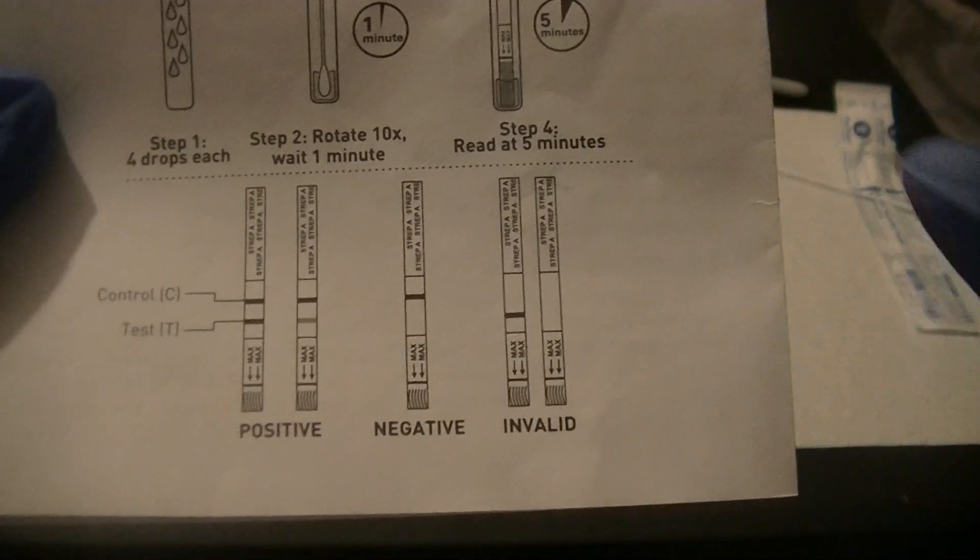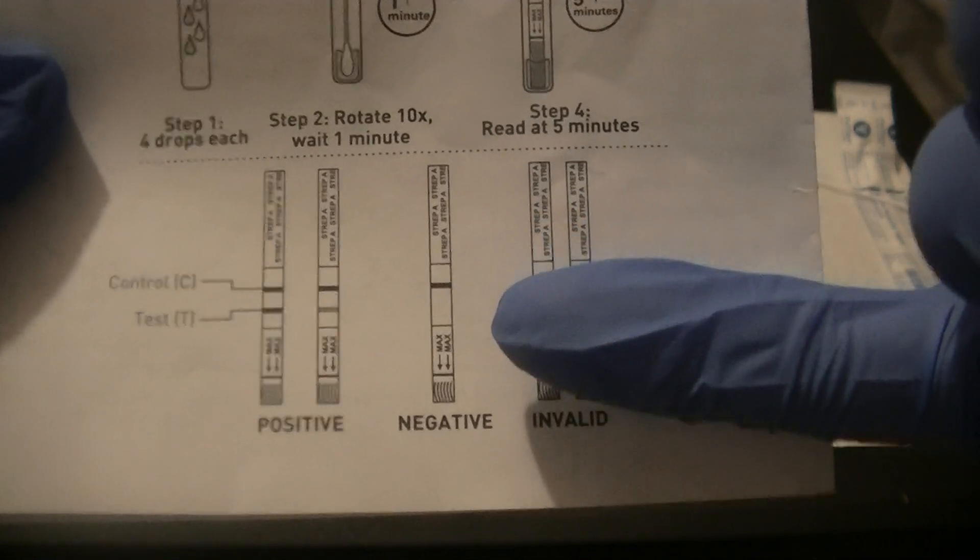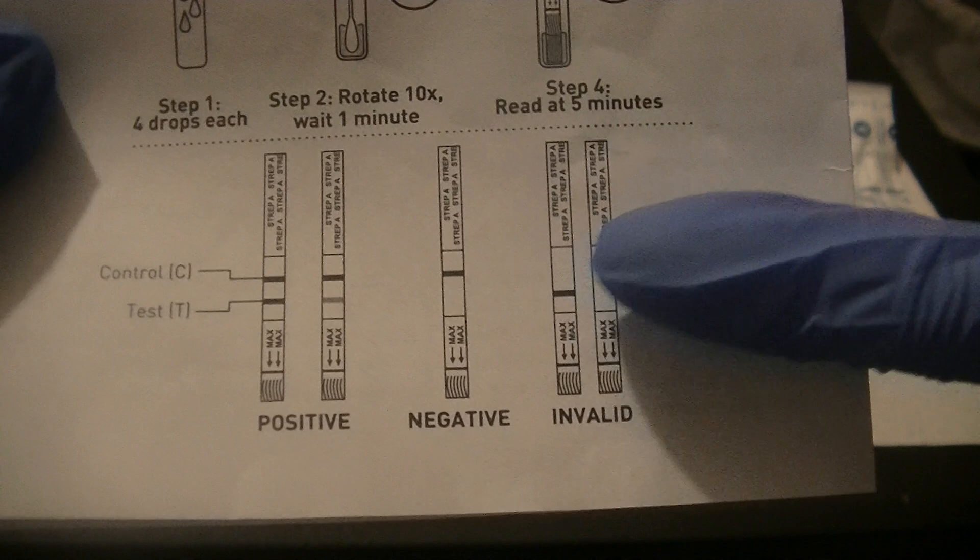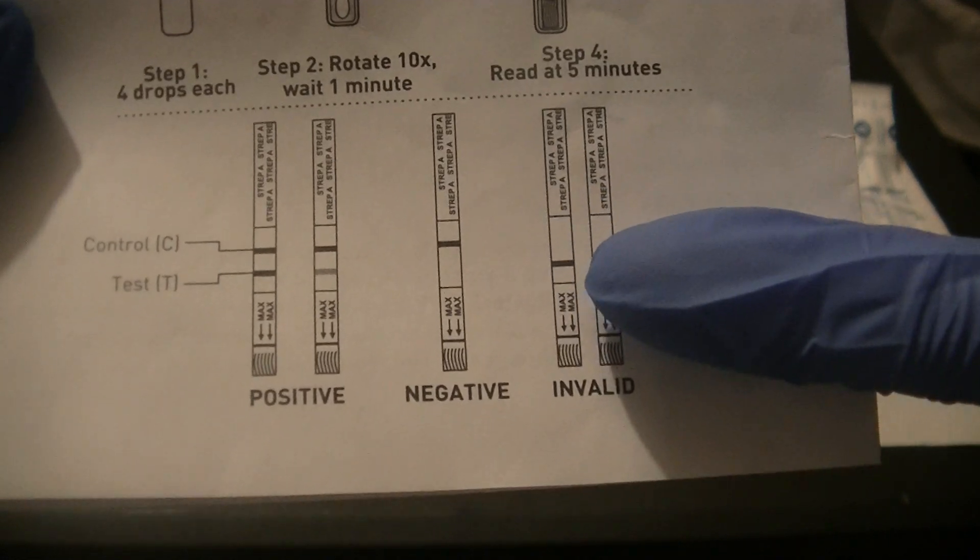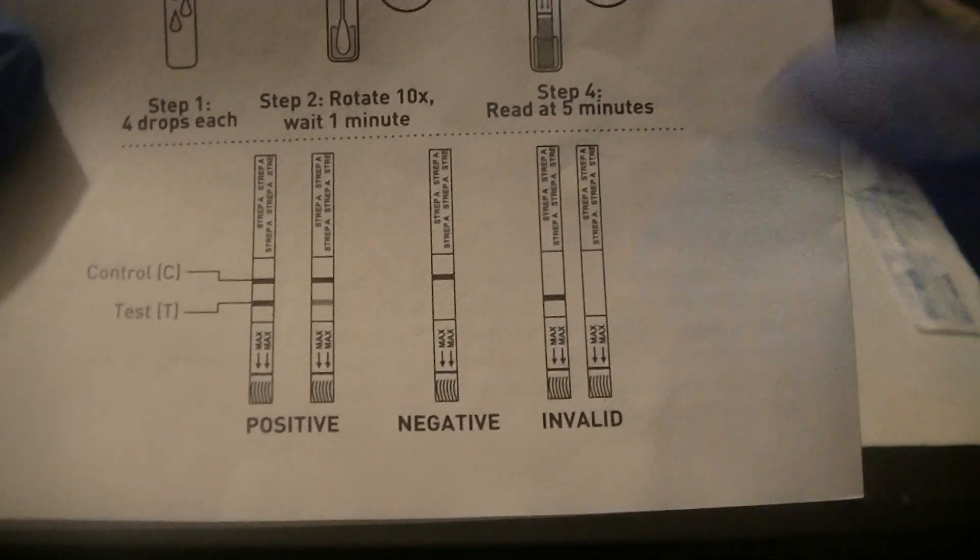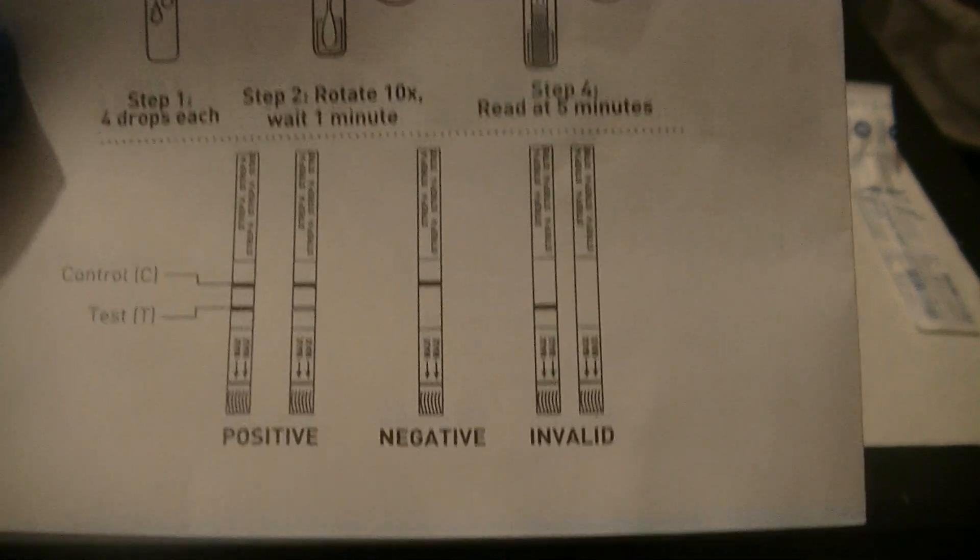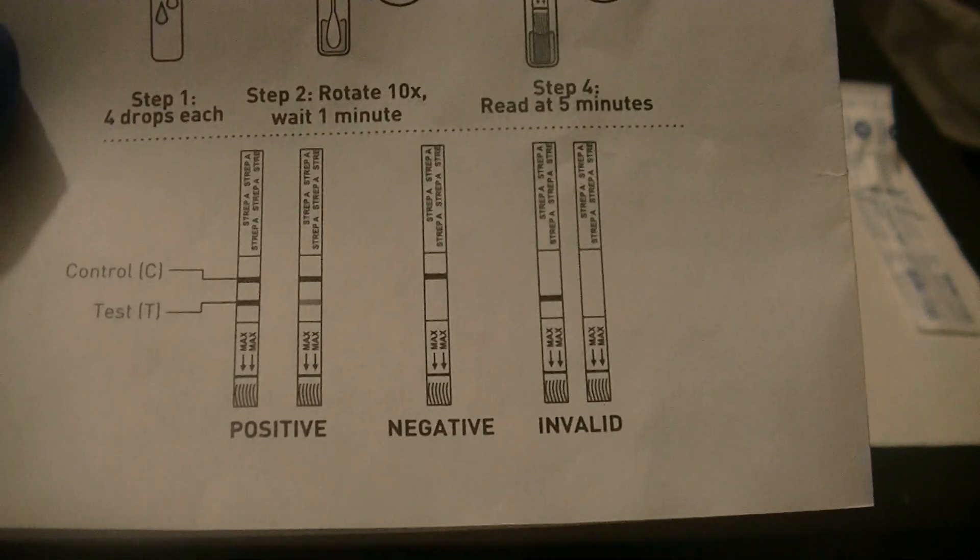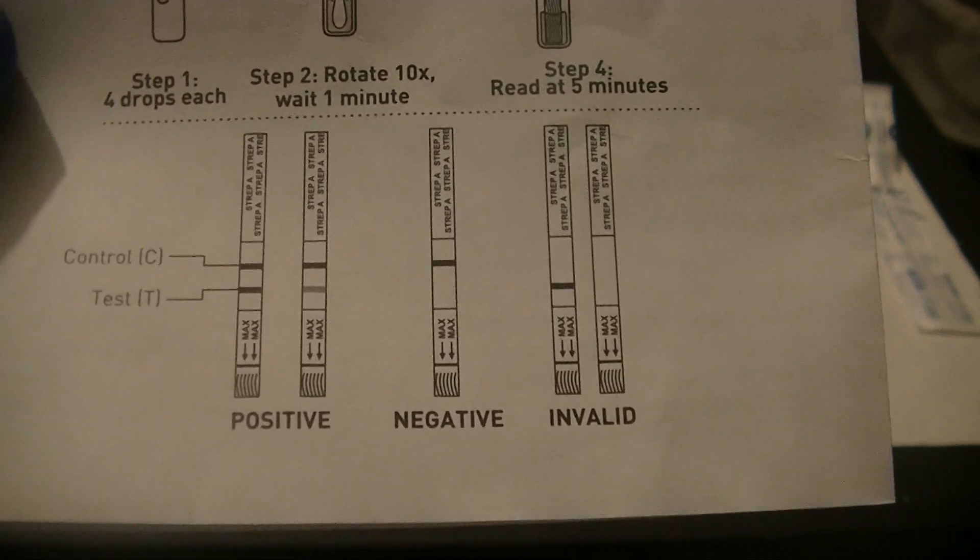A negative test will show you a control line but no test line. And an invalid test, if there's no control line, even if you see a positive line in the test area, we cannot trust the test because the sample did not travel all the way through the testing area on the immunoassay stick.